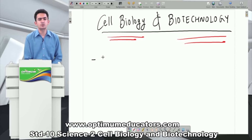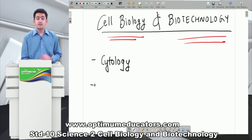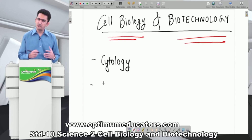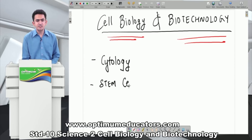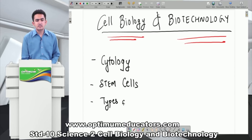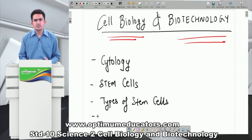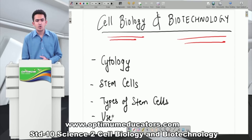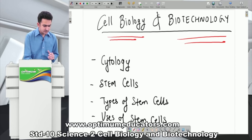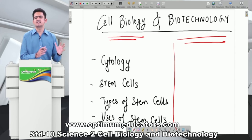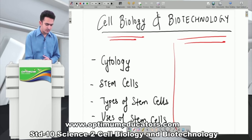Under cell biology, I will take you through the concept of cytology. Then I will teach you a very interesting and latest concept in biology — stem cells. Then I will go further and teach you about the types of stem cells, and lastly the benefits and uses of stem cells. This will help us finish the first section of the chapter.